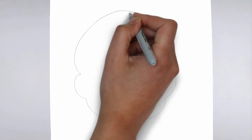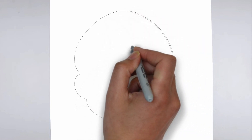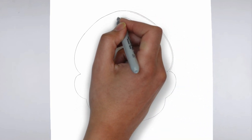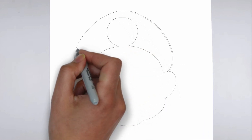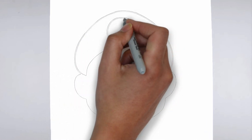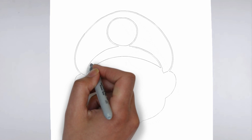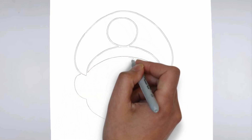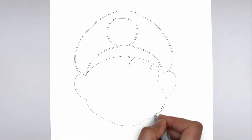First, we'll begin by sketching the basic shape of our subject. Make light, loose strokes to establish the overall form and proportion. Don't worry about details at this stage, just focus on getting the basic shape right.